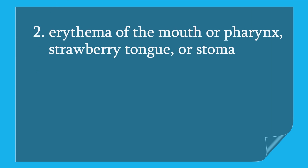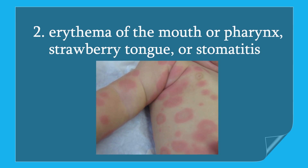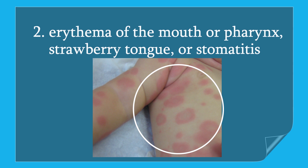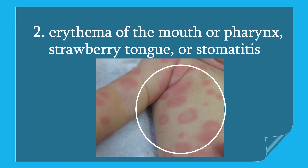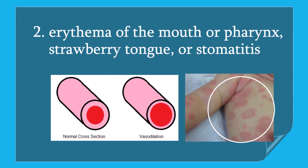Number two is erythema of the mouth or pharynx, strawberry tongue, or stomatitis. Erythema means superficial reddening of the skin, usually in patches. This happens as a result of dilation of the blood capillaries.